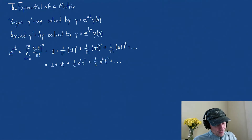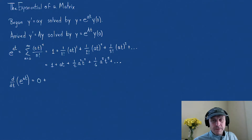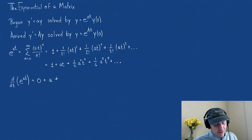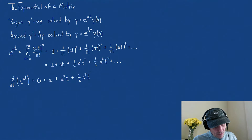Now let's find the derivative with respect to t of e to the a t. The derivative of 1 is 0, plus the derivative of a t is just a, plus the derivative of one-half a squared t squared — since the derivative of t squared is 2t and we multiply by one-half — that gives a squared t. Then continuing, we get one-half a cubed t squared, and the next term contributes one-sixth a to the fourth t cubed, and so on.